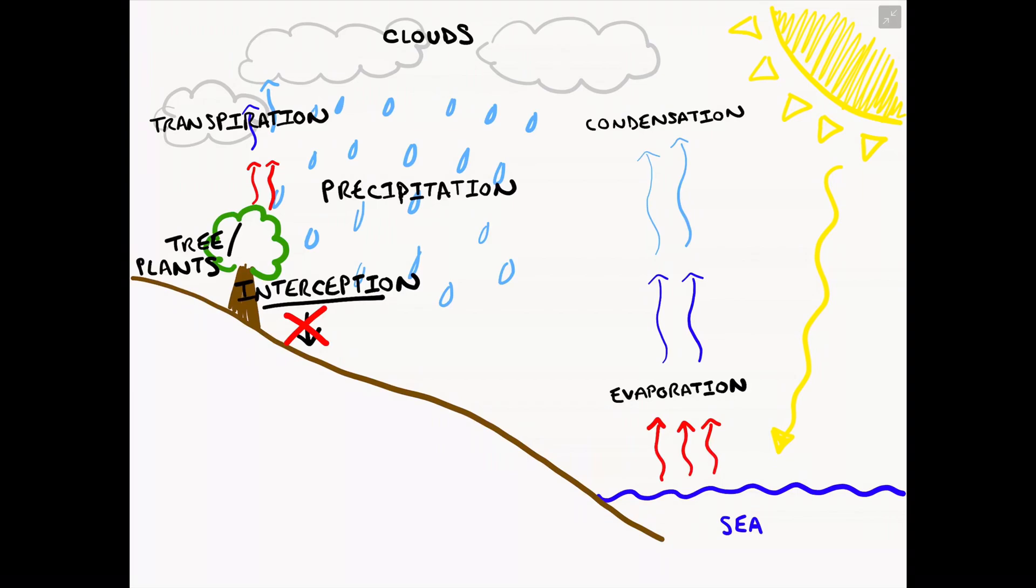If the precipitation does not come into contact with trees or plants, it might instead come into contact with the ground surface. If precipitation falls on tarmac, concrete, a road, or a driveway, these types of materials are known as impermeable. They will not let the water particles infiltrate or go into them.